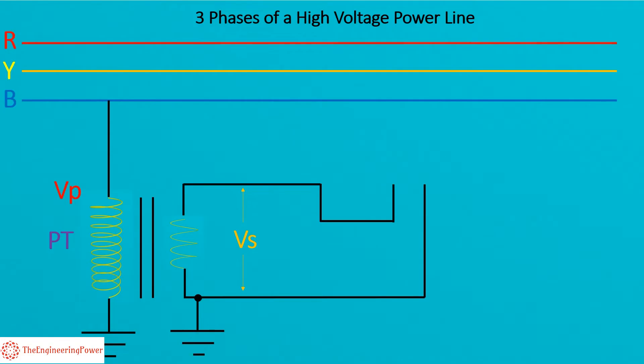The primary of the PT is connected to the line on which we want to measure the voltage. The secondary of the PT is connected to either a voltmeter or a relay.